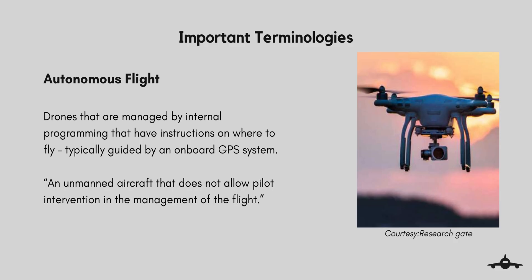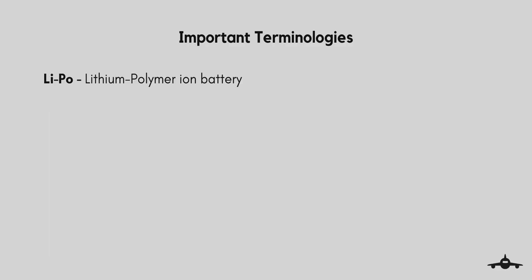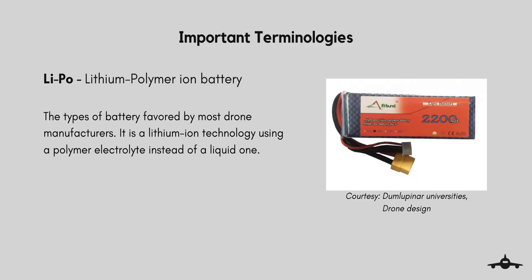LiPo — Lithium Polymer — is a type of battery favored by most drone manufacturers. It is a lithium-ion technology using a polymer electrolyte instead of a liquid one. These batteries provide higher specific energy compared to other lithium battery types and are used in applications where weight is critical, such as mobile devices and radio-controlled drones and aircraft.